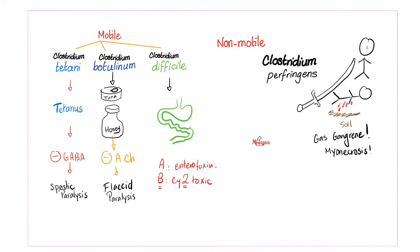Clostridium botulinum is a gram-positive rod, spore-forming, anaerobic, yet motile. It releases botulinum neurotoxin, which you can be exposed to via tuna, honey, wound infections, or inhalation. This botulinum toxin inhibits the release of acetylcholine at the neuromuscular junction, causing flaccid paralysis — such as ptosis, diplopia, descending flaccid paralysis, constipation, and floppy baby syndrome.